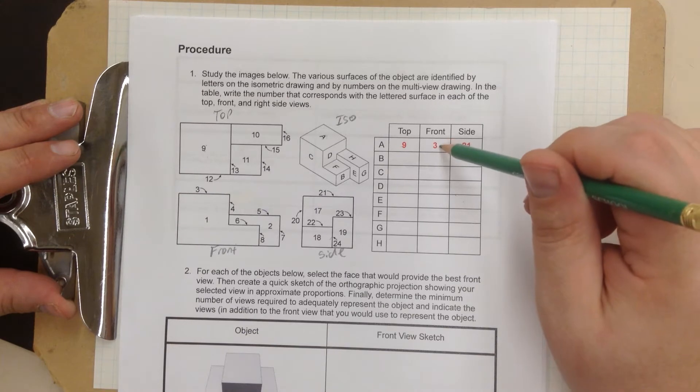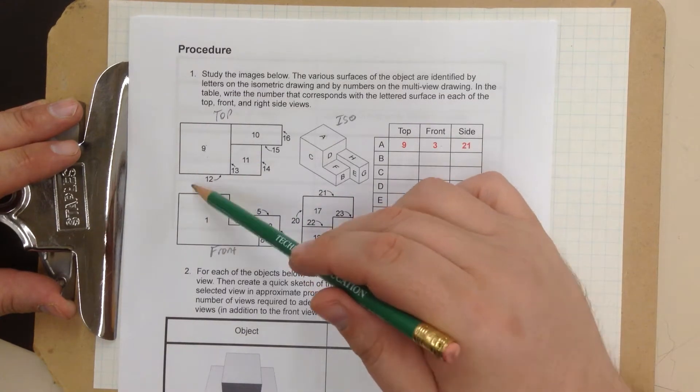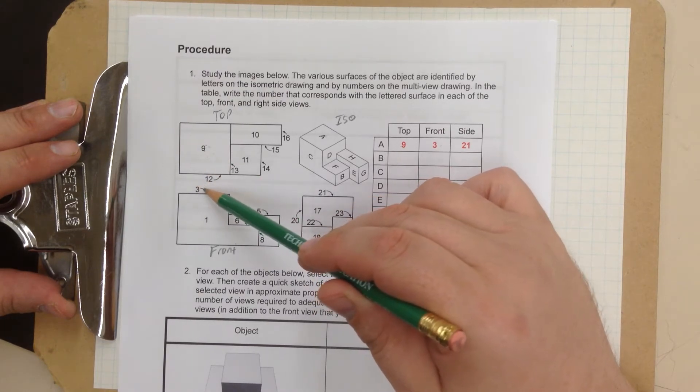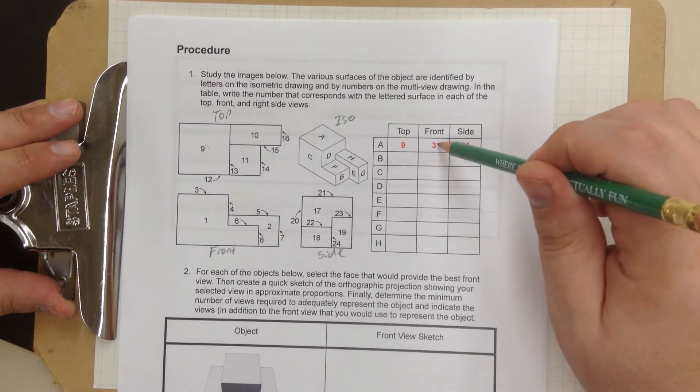Now let's look at the front view. The front view is number 3. So see, it's the same part. That's the same. Number 3 right there. They placed it right there.